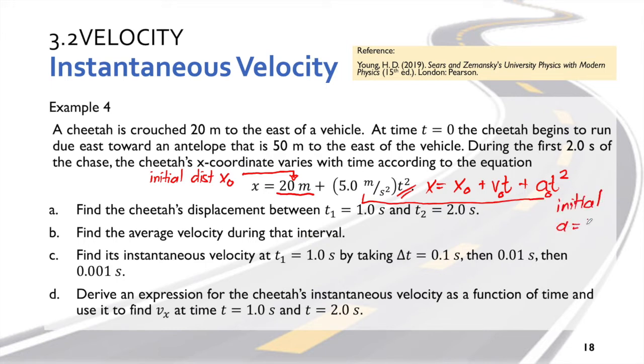But for our velocity, our initial velocity is zero. So again, this is the initial distance. The initial velocity is zero because we don't have t here, and 5 meters per second squared is actually our initial acceleration.